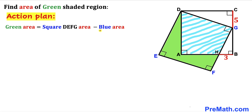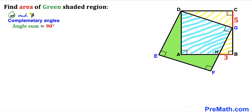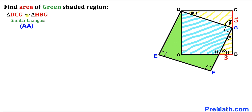Our next task is to calculate this blue area and the area of square DEFG. Let's assume that alpha and beta are two complementary angles — in other words, the sum of these two angles equals 90 degrees. In triangle DCG, one angle is 90 degrees, one is alpha, so the third is beta. In triangle HBG, one angle is 90 degrees, so we conclude that triangles DCG and HBG are similar triangles according to the angle similarity theorem.